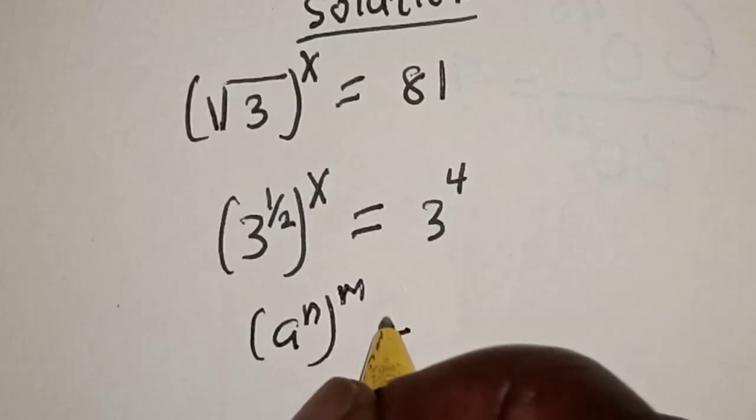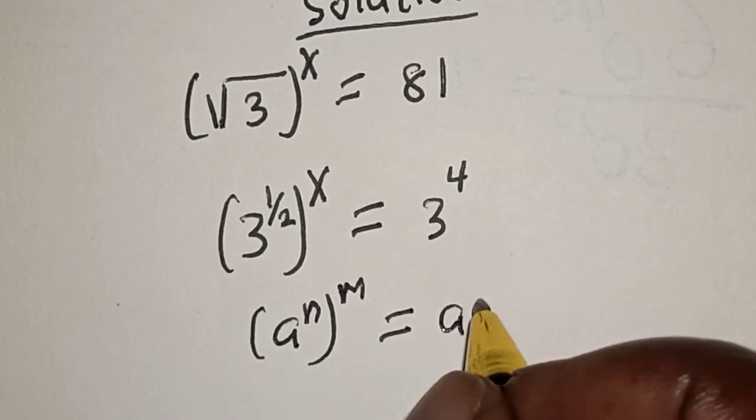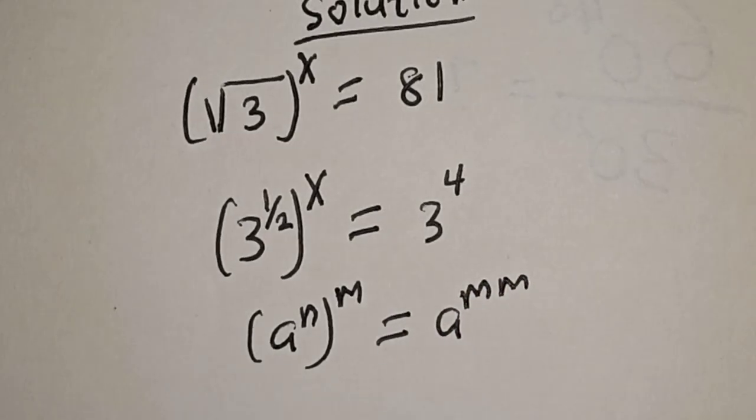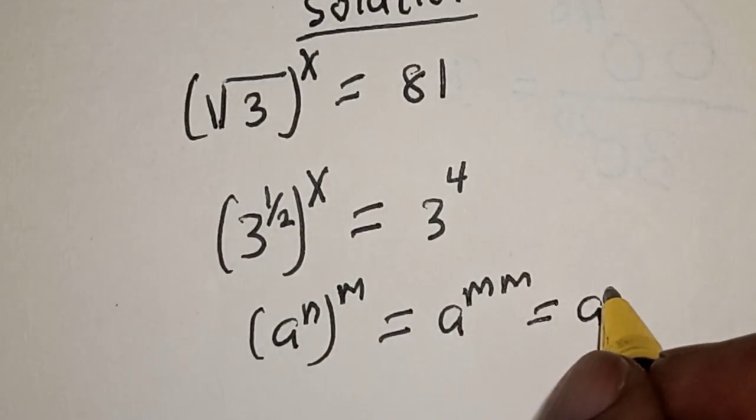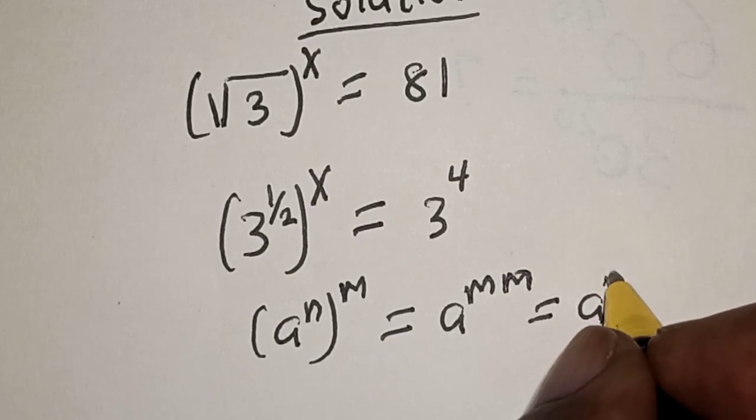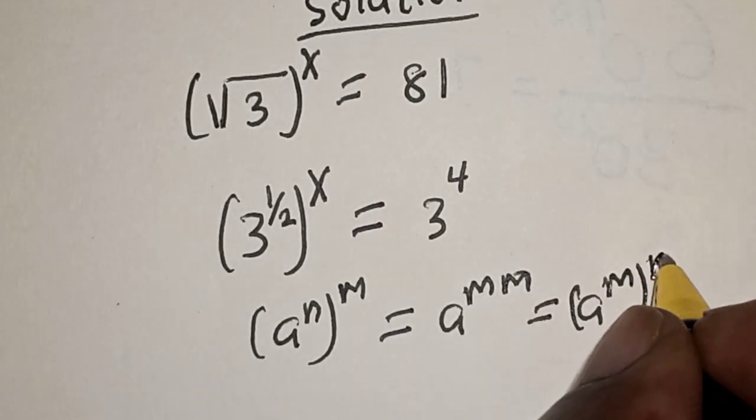If you have a raised to power n raised to power m, this is equal to a raised to power mn. This is equal to a raised to power m raised to power n.